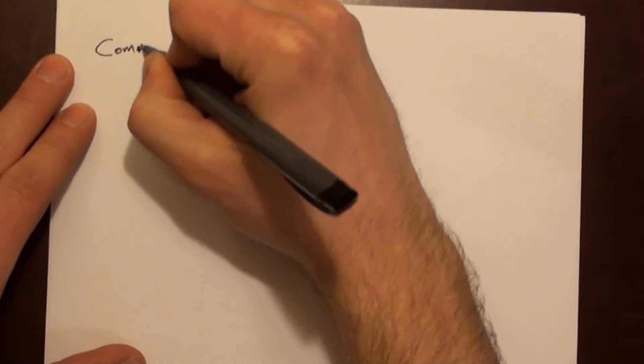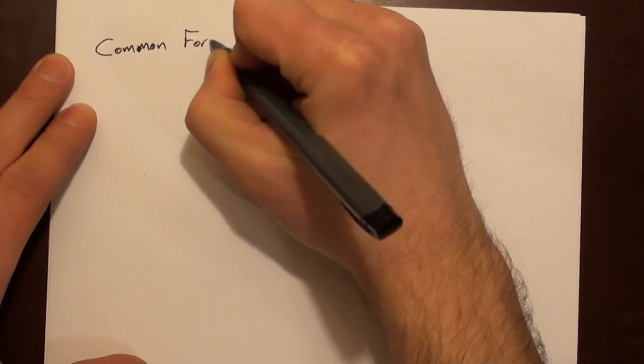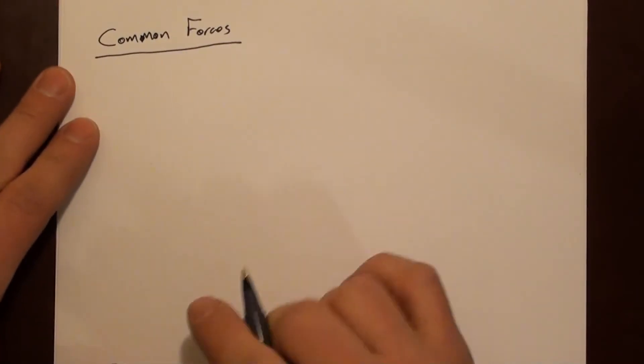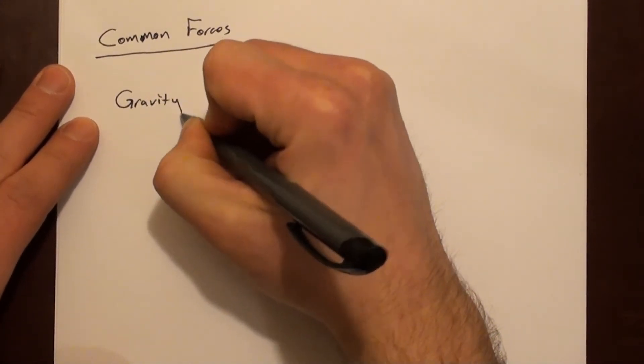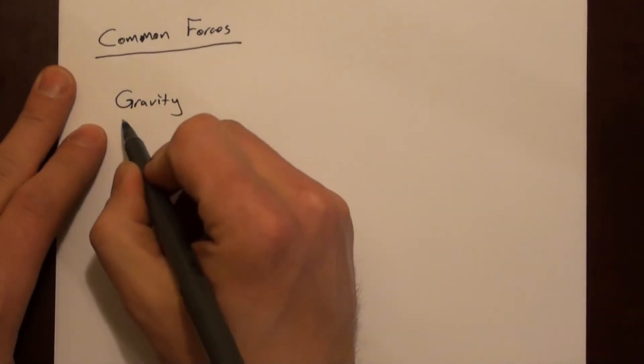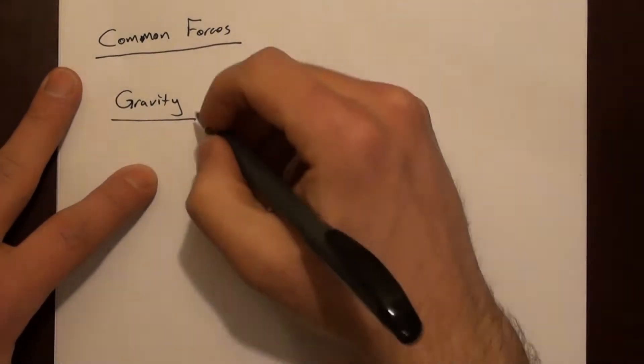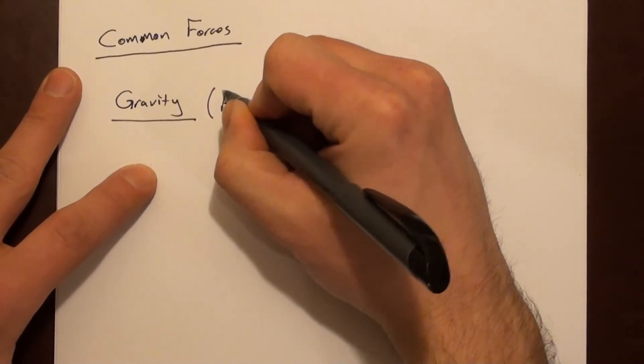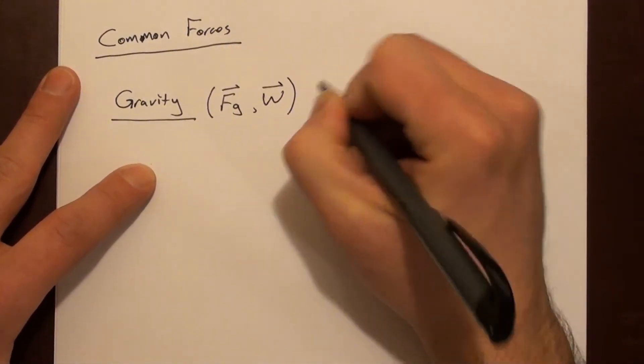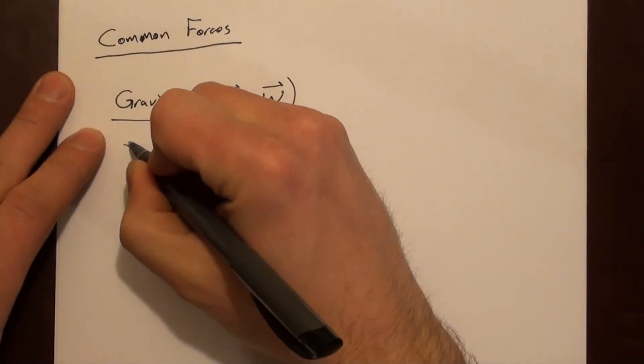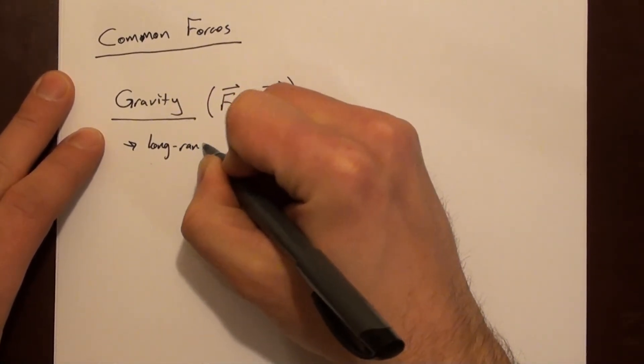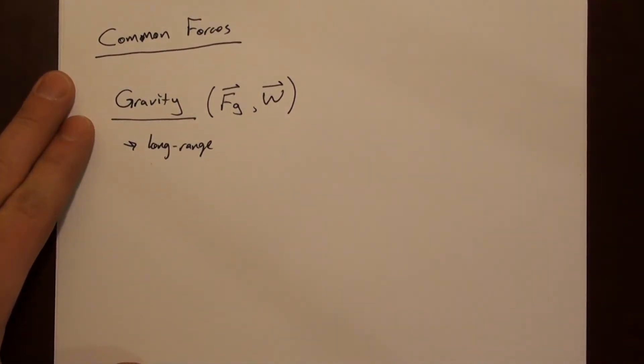So let's maybe come up with a list of common forces. One simple force to think about is gravity. Sometimes we think of gravity as weight. The symbol we typically use for this is F sub G. Sometimes we use a capital W. Gravity is a long range force. In fact, it's the only long range force we're going to talk about in this course.